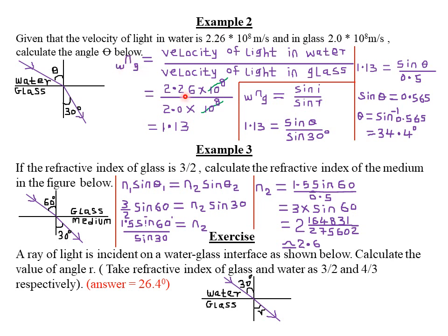So N water-to-glass equals 2.26 × 10⁸ divided by 2.0 × 10⁸. The 10⁸ terms cancel out, giving 2.26 divided by 2.0, which equals 1.13. Remember, the refractive index is dimensionless — that's why there are no units, because they cancel out. Now that we have the refractive index from water to glass, we can use Snell's law: refractive index from water to glass equals sine of the angle of incidence in water divided by sine of the angle of refraction in glass.